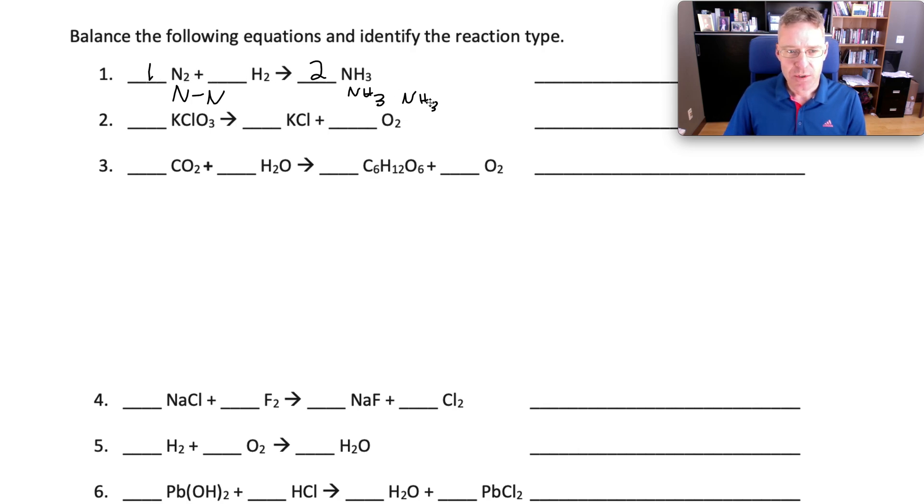So we now have 2 nitrogen and 2 nitrogen. When there's no number in front, we treat it as a 1. The hydrogen count, there's 3 and 3, 6 here. So we need to have 6 on this side. They come in pairs. So we're going to need 3 pairs. So the correct coefficients are 1, 3, and 2 for the first question.